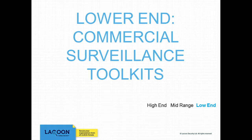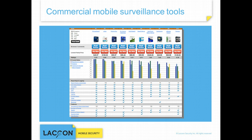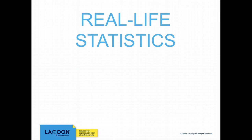Commercial mobile surveillance tools, sometimes marketed as parental controls and spouse monitoring, are effectively used also for personal and corporate espionage, as well as by law enforcement agencies. These commercial tools are sold for as little as $50 a year, and as you can see, are popular enough to garner their own ratings and review pages.